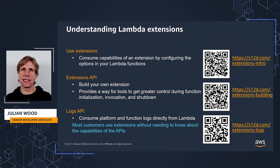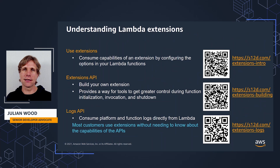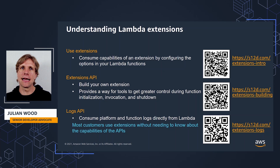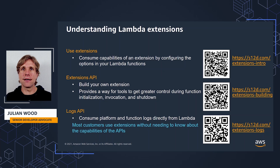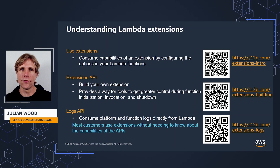So let's look at how extensions actually work. There are three broad categories. First, the extensions themselves — how you use or consume an extension by adding it to your environment. Second, the extensions API, which makes it easy to build or integrate your own tools to hook into the Lambda lifecycle and get visibility and control during function initialization, invocation, and shutdown. And third, the logs API, which allows extensions to get log data directly from the Lambda service to send elsewhere. Each topic also has related blog posts.